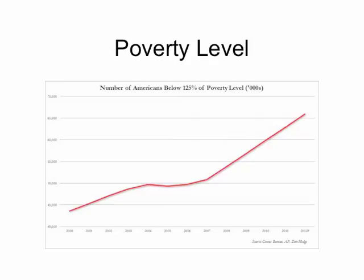Here's a graph showing the poverty level. This shows the number of Americans that lived below 125% of the poverty level. Notice those numbers keep increasing starting in 2007, with a steady increase all the way up to 2012.